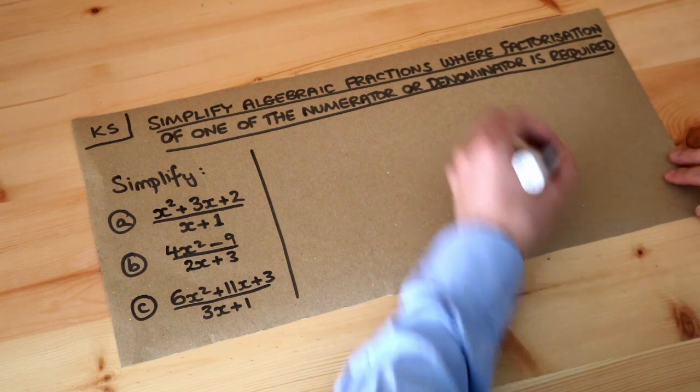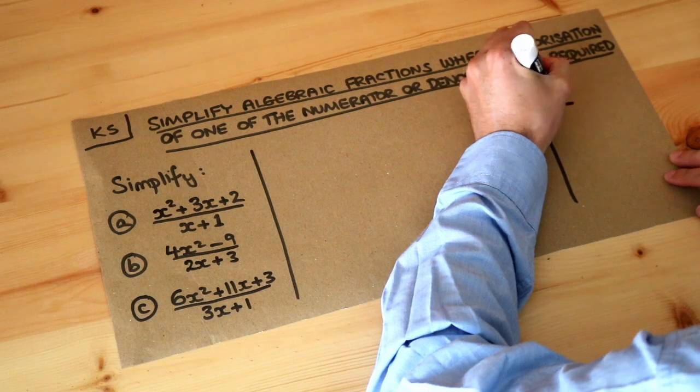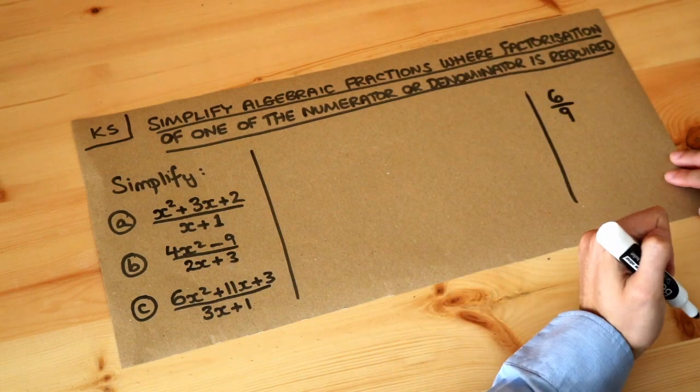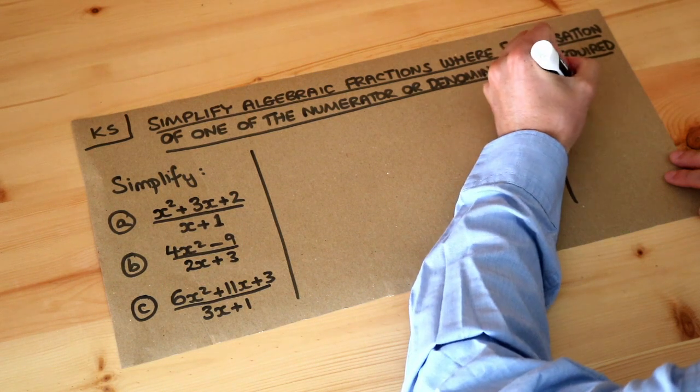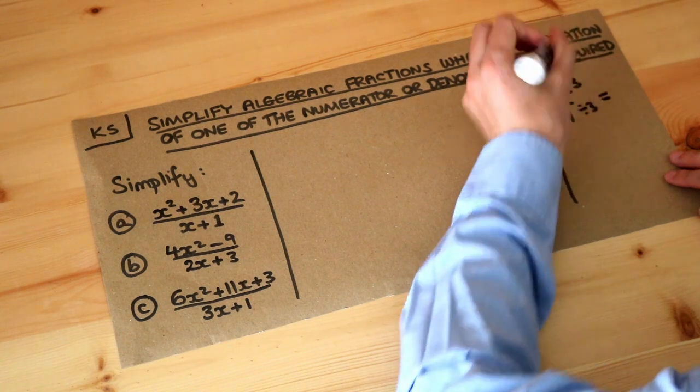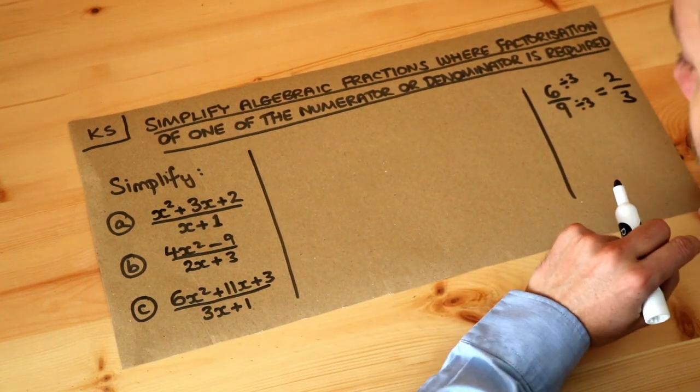Now remember how we simplify fractions. If we had for example 6 over 9, then we see what could we divide top and bottom both by. Well we could divide top and bottom both by 3, and 6 divided by 3 is 2, 9 divided by 3 is 3. That's how we simplify fractions.